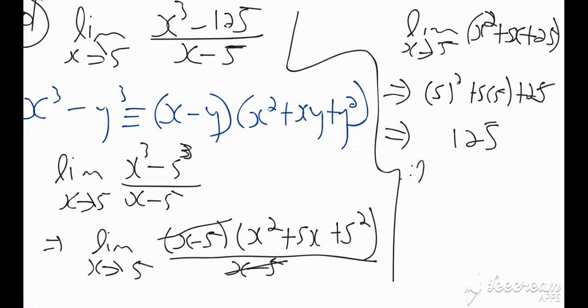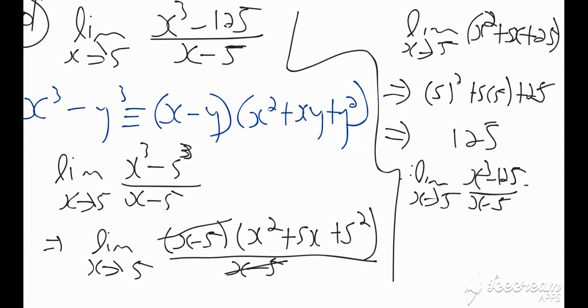So therefore the limit of x cubed minus 125 all over x minus 5 as x tends towards 5 is equal to 75.